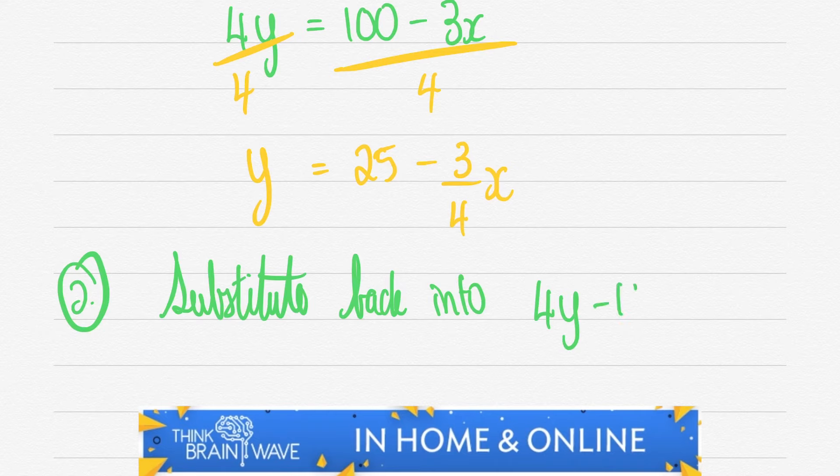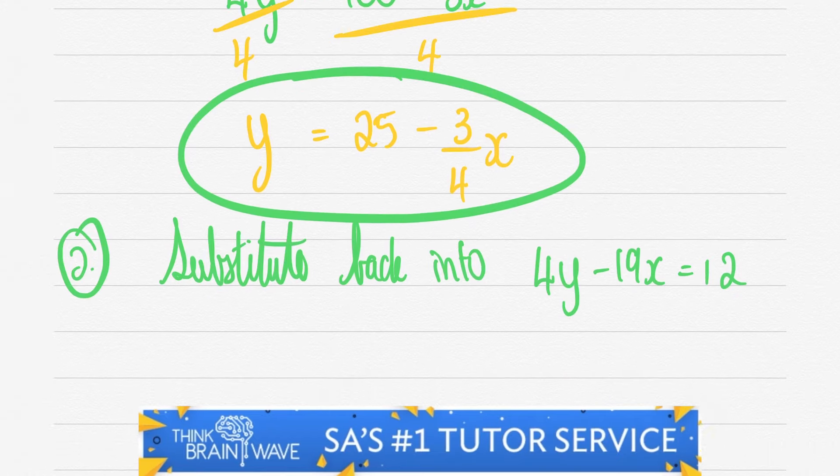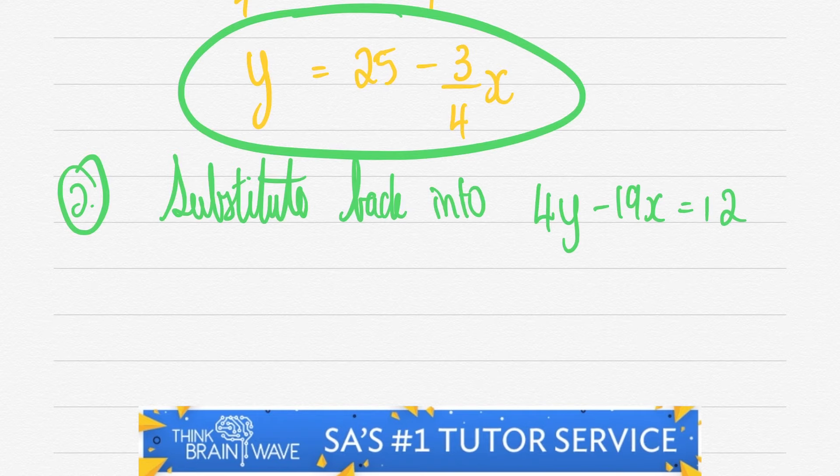This way we can get rid of all the y values and we'll only have x values which we'll then calculate the answer to. So there we go. We've circled that. Let's move forward.